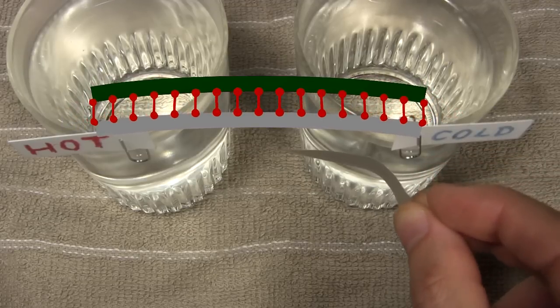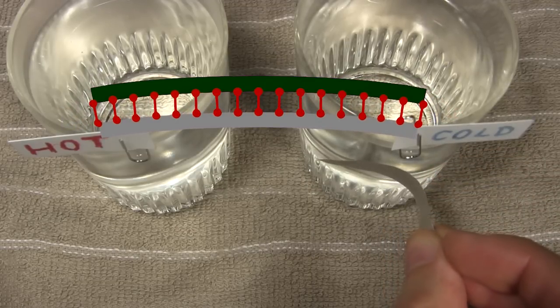And putting it in the cold air causes the foil to contract again, putting it back in its pre-curved shape.